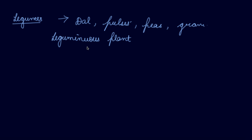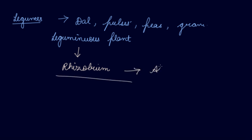Most crops require a lot of nitrogen to make proteins. There is a bacteria known as Rhizobium. This bacteria can take atmospheric nitrogen — it does not depend on the soil for nitrogen. These Rhizobium can absorb atmospheric nitrogen and convert it into a soluble form that the plants can absorb.